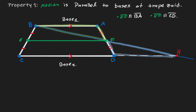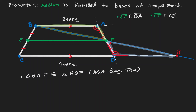Let's concentrate on these two triangles. Notice that we have vertical angles: angle AFB is vertical to angle RFD. In addition, we also have alternate interior angles. Since our bases were parallel to each other, angle A is an alternate interior angle to angle D. This is enough information to claim that these two triangles are congruent to each other by angle-side-angle: here we have an angle, here we have the side, and here we have the angle.